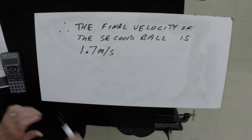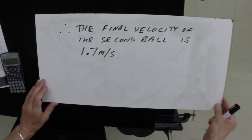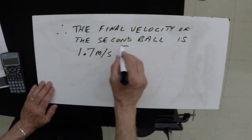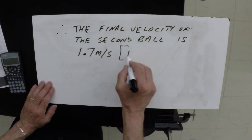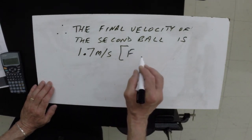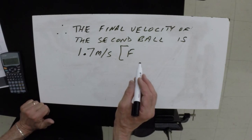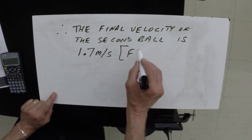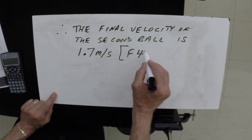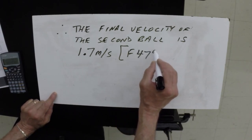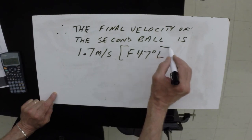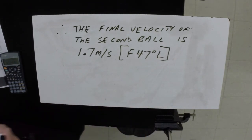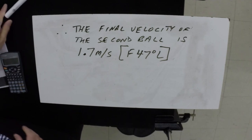Putting it together, we get a velocity of 1.7 meters per second forward, at 47 degrees to the left. That's the final velocity of the second ball.